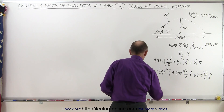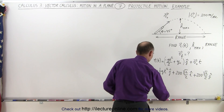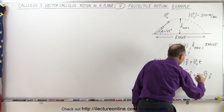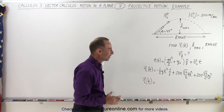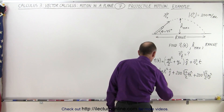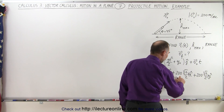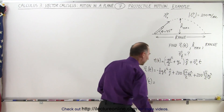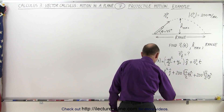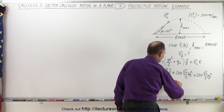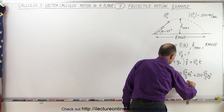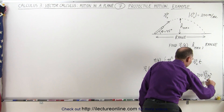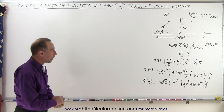Combining the x and y components, the position vector as a function of time is: 100 times the square root of 2 in the i direction — since 200 divided by 2 is 100 — plus, in the j direction, minus one-half gt-squared plus 100 times the square root of 2 times t. So now we have the i and j components of the position vector.